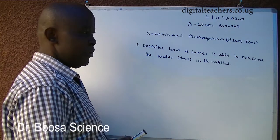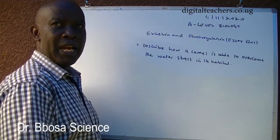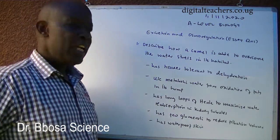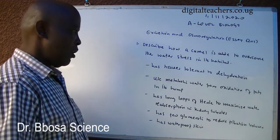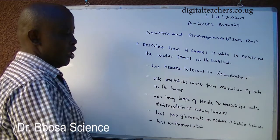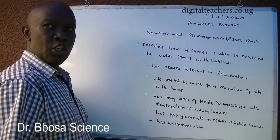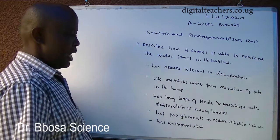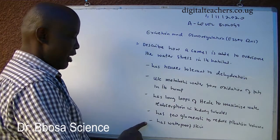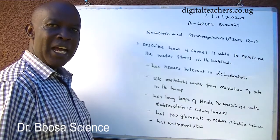Number 1: Describe how a camel is able to overcome the water stress in its desert habitat. One, has tissues tolerant to dehydration. Two, uses metabolic water from oxidation of fats in its hump. Three, has long loops of Henle to maximize water reabsorption in the kidney tubules. Four, has few glomeruli to reduce filtration volume. Five, has waterproof skin to reduce water loss by evaporation.